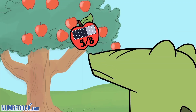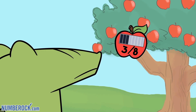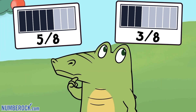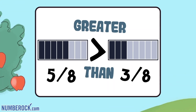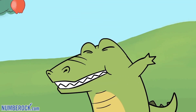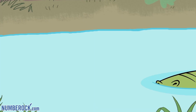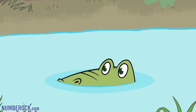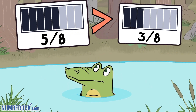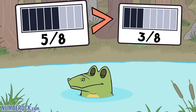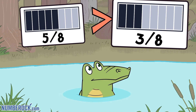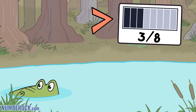5/8 and 3/8 — each has a fraction bar that illustrates the equal parts for the gator to see that 5/8 is greater than 3/8. The fraction that is greater gets eaten by the alligator. The fraction that is least is never part of his feast.